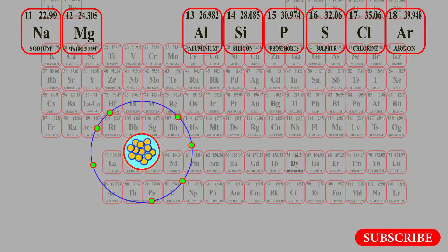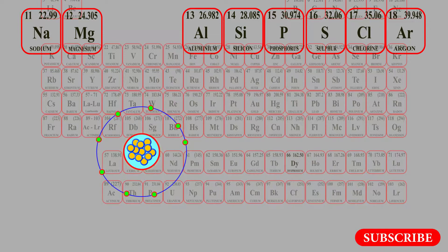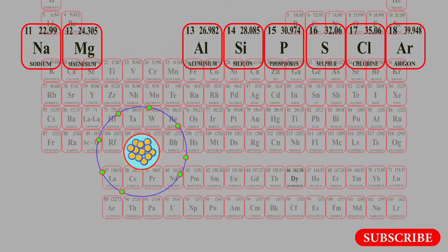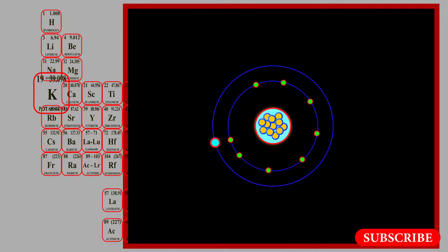With increasing atomic number, we finally reach the extreme right element, which is the noble gas argon, having atomic number 18. The outermost shell is completely filled with 8 electrons. With further increasing atomic number, we reach the first element of the fourth period, which is potassium, having atomic number 19. Here we can see a new energy shell having one electron.